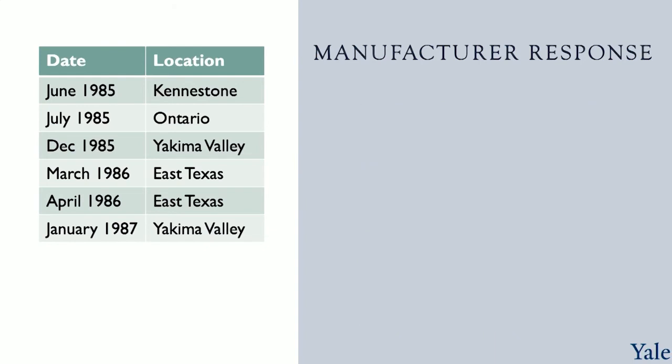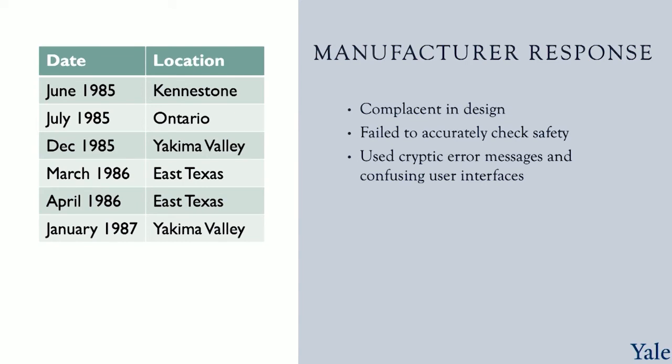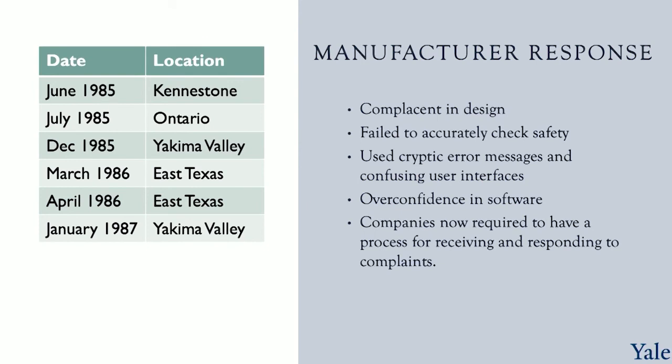We can learn a lot from the failures of the manufacturer to respond to complaints. They were complacent in design and failed to accurately check safety, assuming that since prior versions were safe, the new version was safe as well. They used cryptic error messages and confusing user interfaces. They were overconfident in their software, failing to conduct adequate investigations following hospital incidents. These failures led to severe injury and death for several individuals. Because of these incidents, companies are now required to have a process for receiving and responding to complaints.